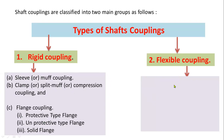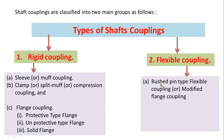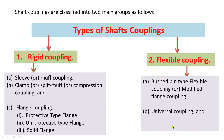Now coming to flexible couplings — flexible couplings are also divided into bushed pin type flexible coupling, which is also known as modified flange coupling, and the second one is universal coupling, also known as Hooke's joint. Hooke's joint is an important machine element for transferring power in automobiles. The third type is Oldham coupling. These three are examples of flexible couplings.